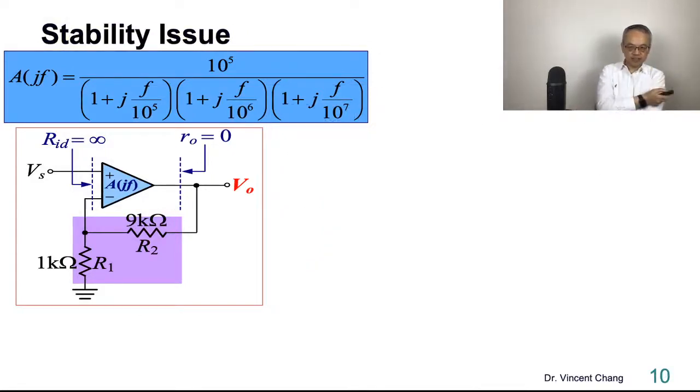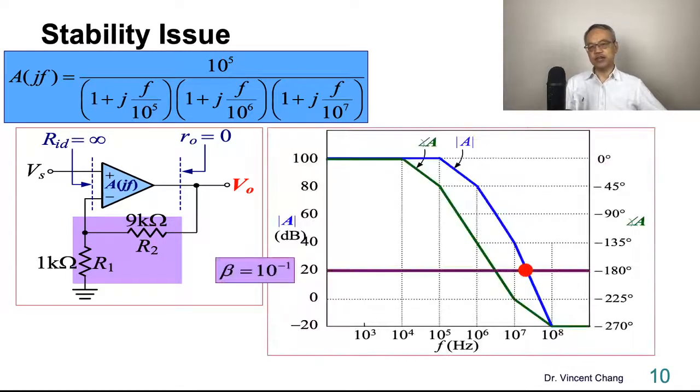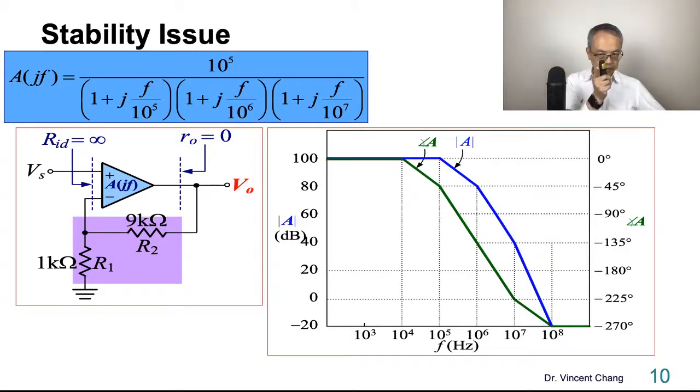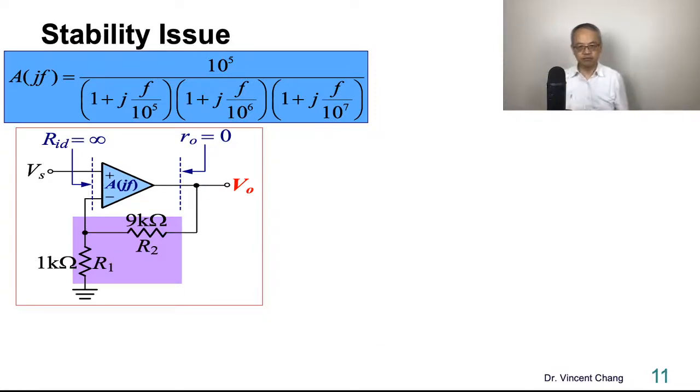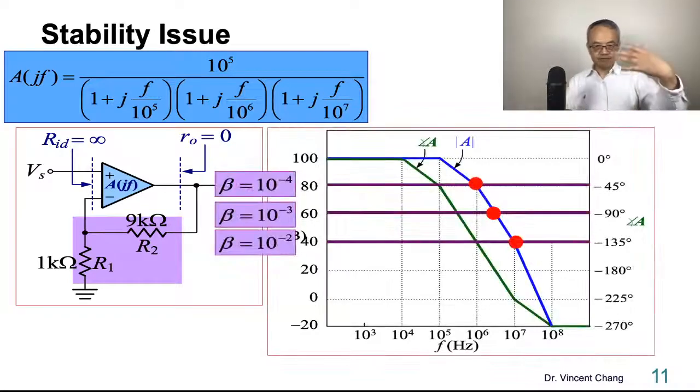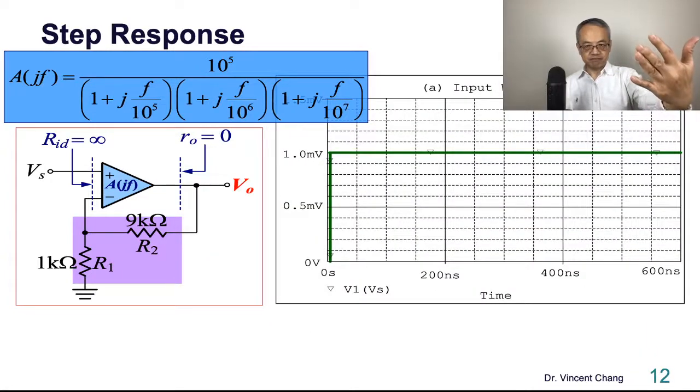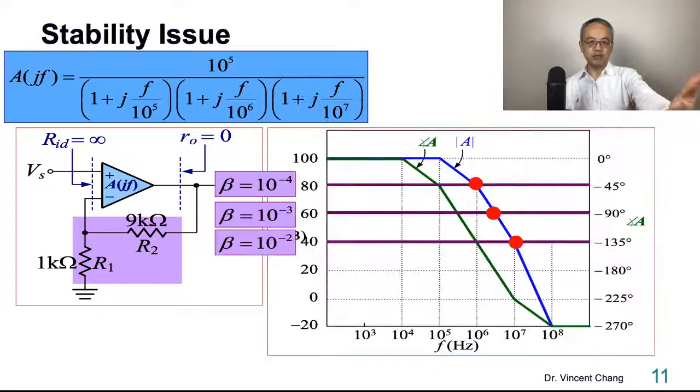Now let me show you another example. 1K, 9K. Stable or not? Of course, you can try the hand analysis first. Because 1 divided by 10, 0.1, 20 decibels. So the 20 decibels line, the intersecting point, the corresponding phase exceeds 180 degrees. Unstable. This is unstable. This is what we learned before. Let's move on.